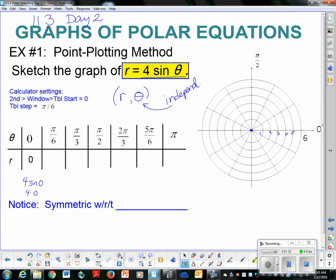Pi over 6, now I'm looking at 4 times sine of pi over 6. The sine of pi over 6 is 1 half, and that will make this a 2. So at pi over 6, so I'm going to travel. Remember how we plot these? We travel up by pi over 6, and then extend out, walk along that ray, till we hit 2. And there is our value.